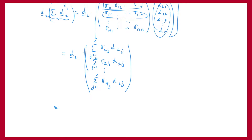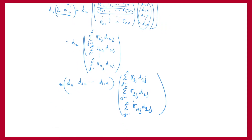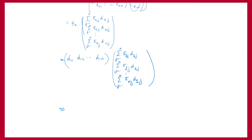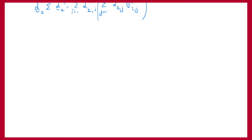Using that alpha is the row vector alpha_1 = (alpha_11, alpha_12, ..., alpha_1n), we carry out this multiplication. We find that alpha_1 * sigma * alpha_1^T equals a double sum. On the previous slide we proved that this matrix multiplication equals this summation expression.